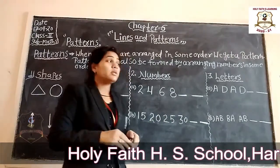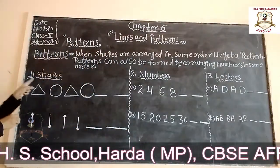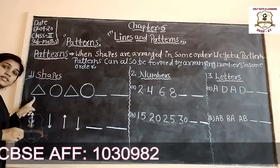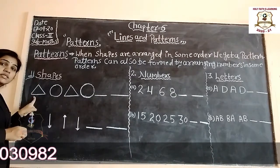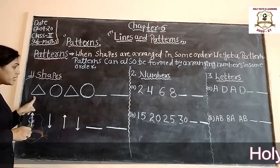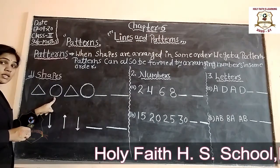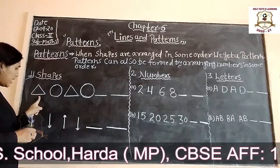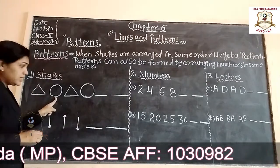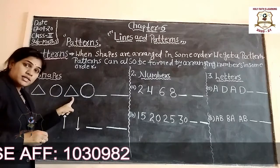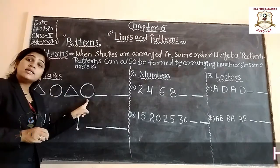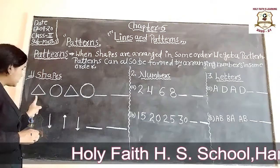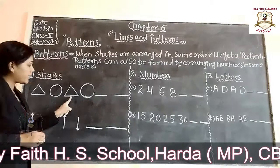Now take an example with shapes. Look here — this is a triangle, and this is a circle. So the sequence is: triangle, circle, triangle, circle.